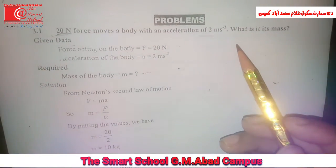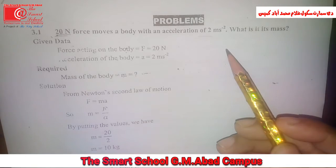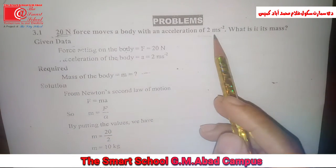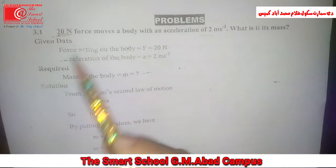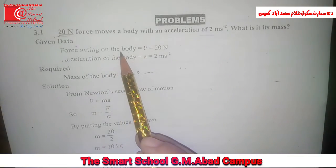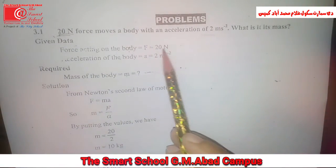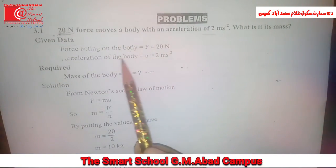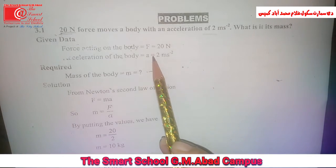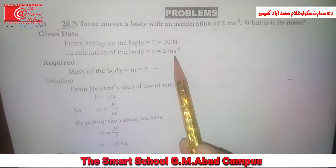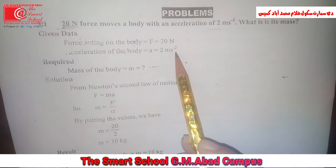So, we can use second law of motion. First, we will write given data. Force acting on the body, f is equal to 20N. Acceleration of the body, a is equal to 2m per second square. This is given data.